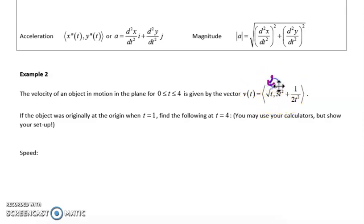This is the dx/dt component here, and the dy/dt component here. And they're telling us if the object was originally at the origin, that's the point (0,0) as we know, when time equals 1, find the following at time equals 4. You may use your calculators, but show your setup.